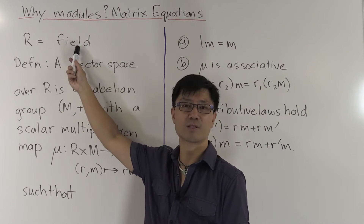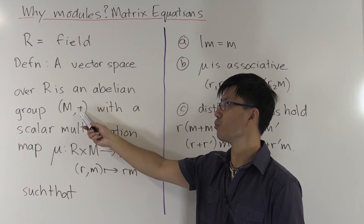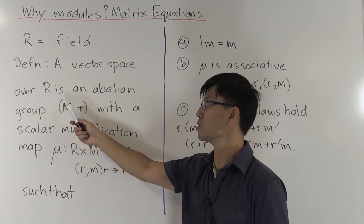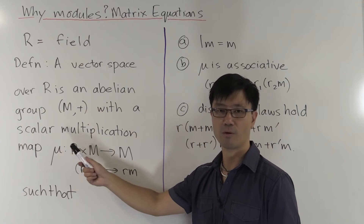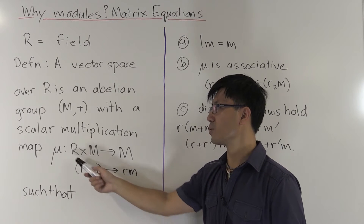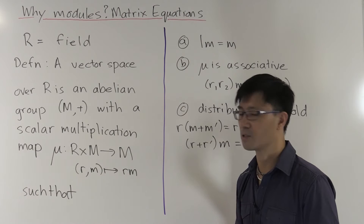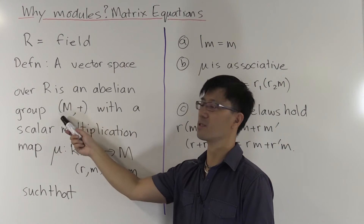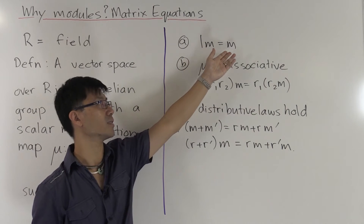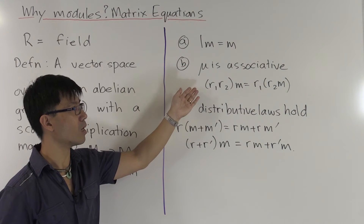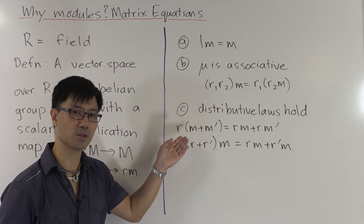What do we need? We need firstly a field of scalars, which we denote by R. A vector space has two operations. It has an addition, denoted with plus, and that gives you an abelian group structure M, denoted M plus. It also has a scalar multiplication map — we can write it as a map mu from R cross M to M. We write the image of r, m as just r times m. This has to satisfy certain axioms: multiplying by one is the identity, scalar multiplication is associative, and the distributive law holds — telling you how addition and scalar multiplication are compatible with each other.